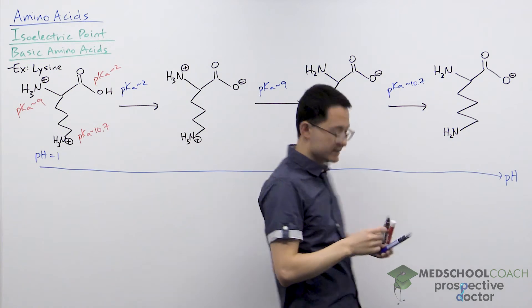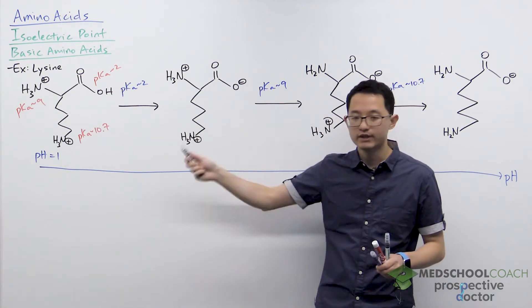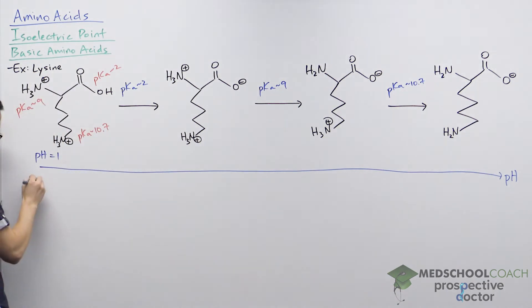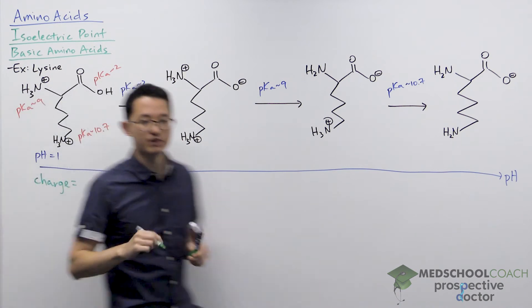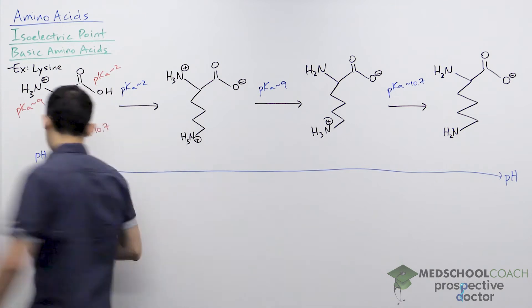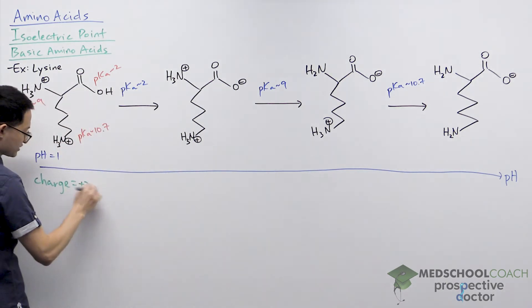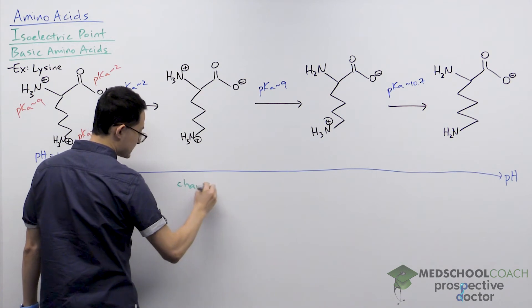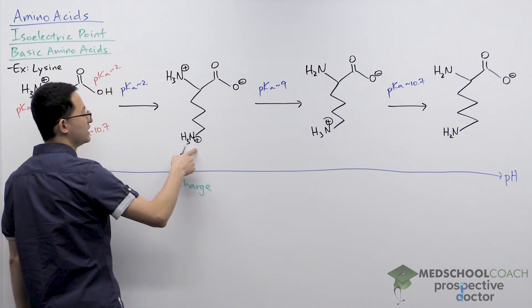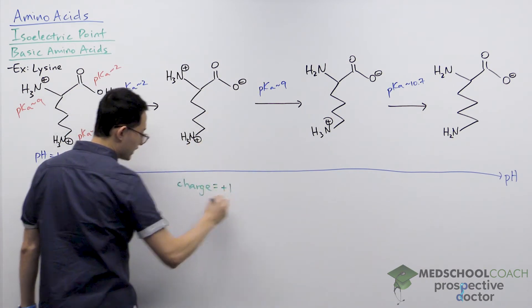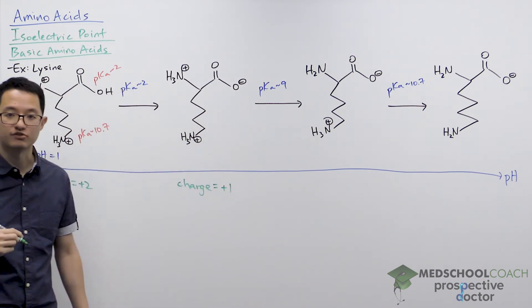Now we can consider what is the charge of all of these molecules. In the beginning, our molecule on the left where all three groups are protonated has a +1, a +1, and no charge, so this molecule has a charge of +2. Our second molecule has a +1 charge, a +1 charge, and a -1 charge. If you add them all up, you end up with an overall charge of +1.